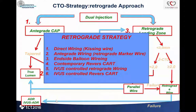Regarding my retrograde strategy, I always try first to do a kissing wire — you don't need much space, just work a few minutes. If this fails, I take the retrograde as a marker wire and puncture towards it with the antegrade wire. If this fails, I try inside balloon wiring — put an antegrade balloon and puncture distal towards the balloon. If this fails, I try a contemporary reverse CART: go beside the balloon, take a small balloon, take a Gaia wire, and look for coaxial alignment so the Gaia wire directs directly to the balloon. If this maneuver fails, I go for controlled or sequential reverse CART to minimize the space during reverse CART.